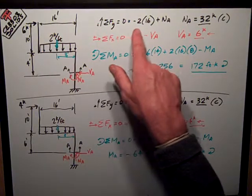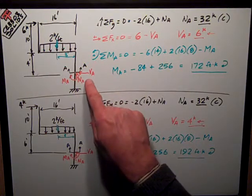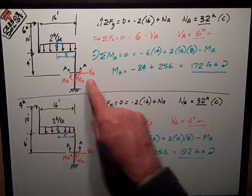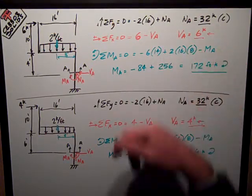Summing, assuming positive is up, I get negative two times 16 plus my NA, normal force, so it's just equal to 32 kips, and it's in compression.